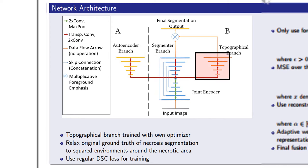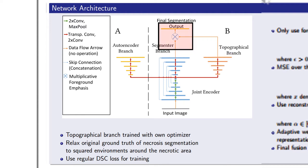The last branch tries to estimate the topographical neighborhood of the necrotic area — this branch basically tries to find the region of interest. The outputs of the segmenter and topographical branch are then fused into the final output.